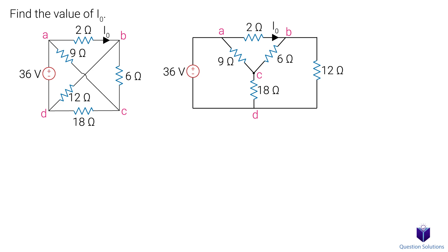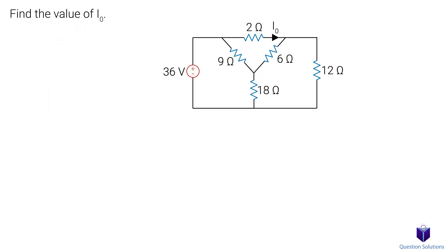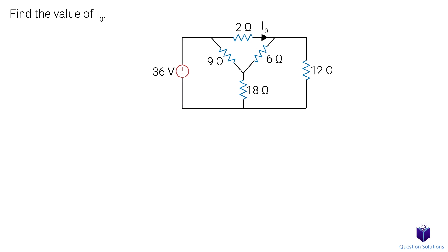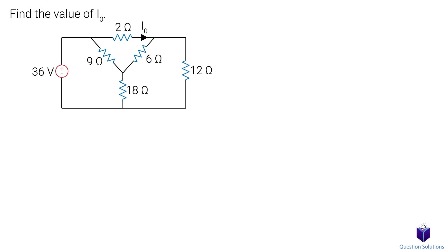One thing you should do is go back and do a quick check to make sure these circuits are equivalent. Looking at point A, it's connected to B, C, and D — so that's true on our new circuit. Between A and B we have a 2-ohm resistor, between A and C we have a 9-ohm resistor, and between A and D we have the voltage source. The rest you can check just like I did to make sure these are the same circuits.